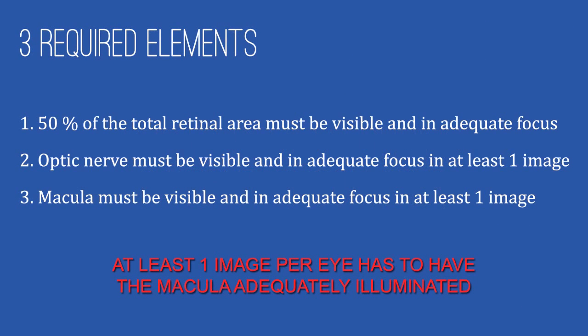As reviewed in the small pupil troubleshooting video, there are three required elements that must be obtained in at least one photo from each eye. To ensure that all of these elements have been captured, it is insufficient to view the thumb images on the screen on the back of the retinal camera. You must zoom in on different portions of each photo to verify that good focus has been achieved and that the macula is not obscured by small pupil artifacts.